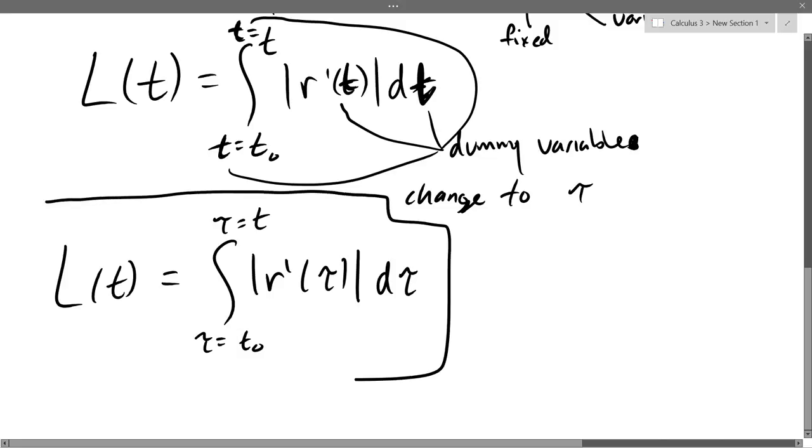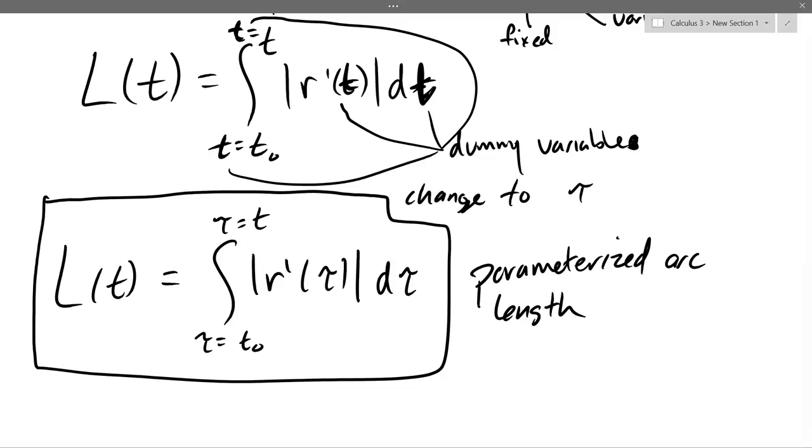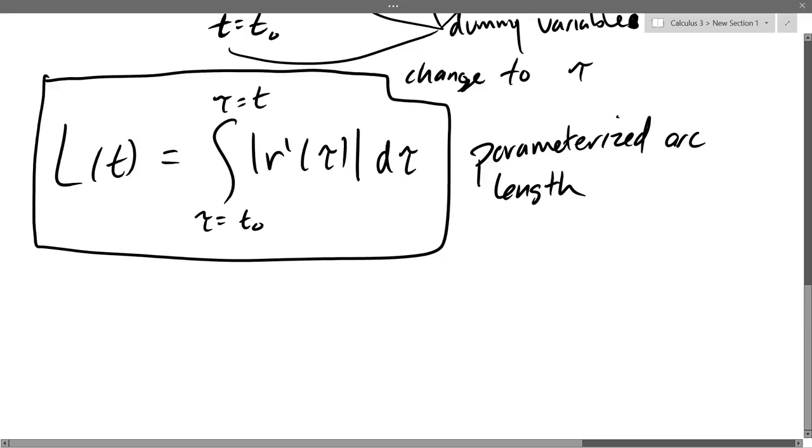And this is what we call parameterized arc length. So, it's called a dummy variable because it doesn't matter what letter I put in there. Think of crash test dummy in a car. It doesn't matter which dummy you pick up off the shelf and put in. As long as they work, you'll pretty much get the same information out.